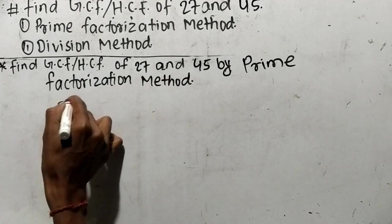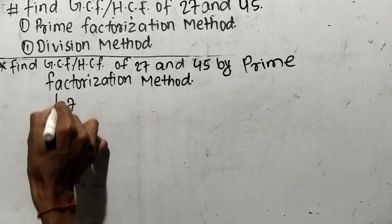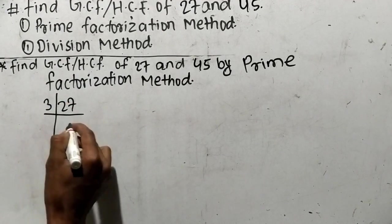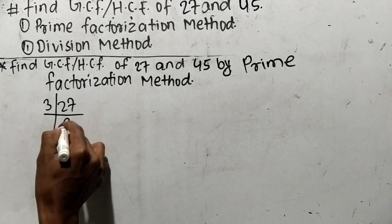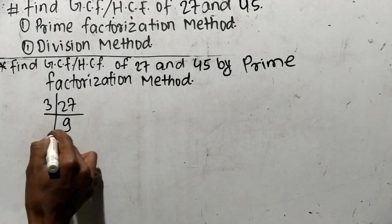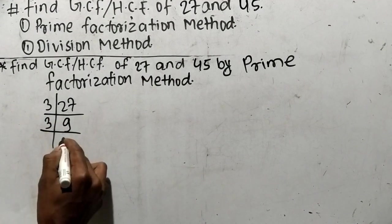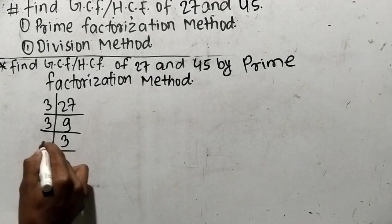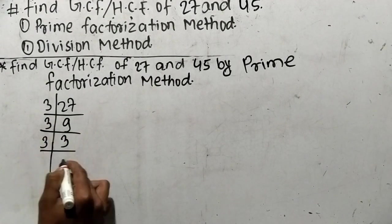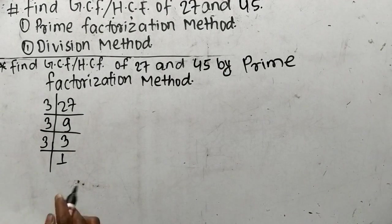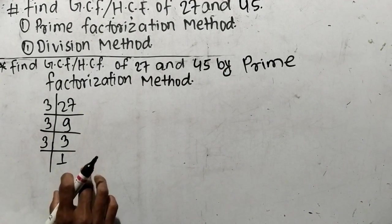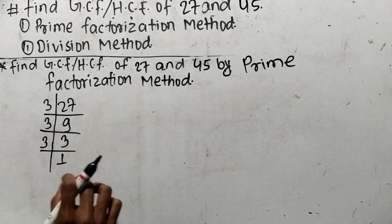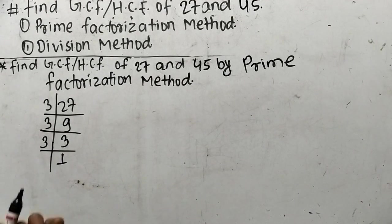So let's find out the prime factors of 27. It is 3 times 9 means 27, like 3 times 3 means 9, and 3 times 1 means 3. So as you can see here, we have found out the prime factors of 27.